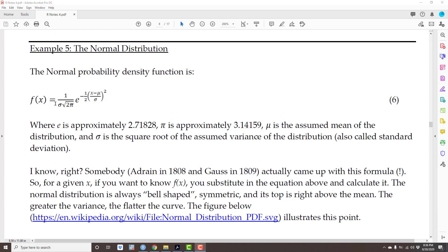f of x is given by this equation. Notice that e here is a very important number in mathematics, approximately equal to 2.71828. Pi is another constant in mathematics, over here, approximately 3.14159. Mu is whatever the assumed mean of the distribution is, and sigma here and here is the square root of the assumed variance of the distribution, also called the standard deviation.